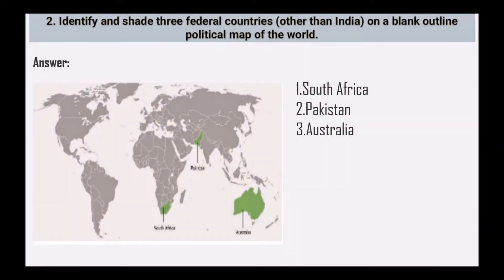Identify and shade three federal countries other than India on a blank outline political map of the world. So this is South Africa, this is Pakistan, and this is Australia.